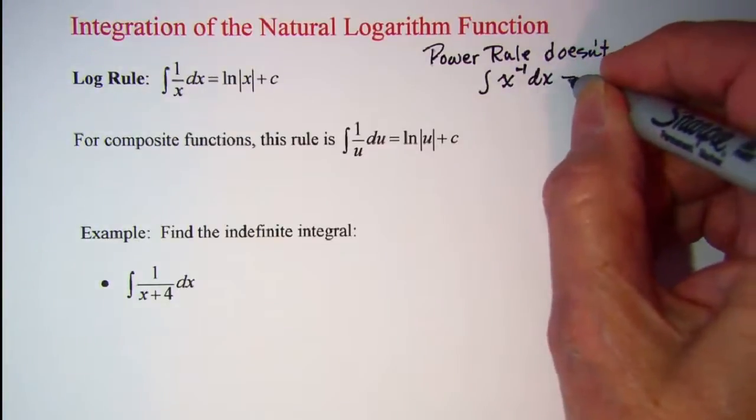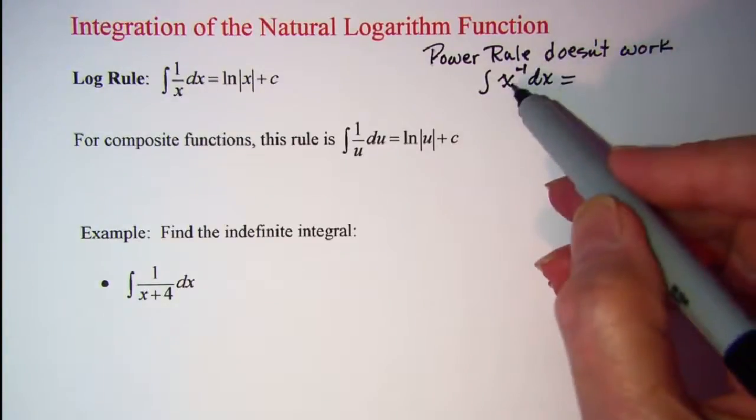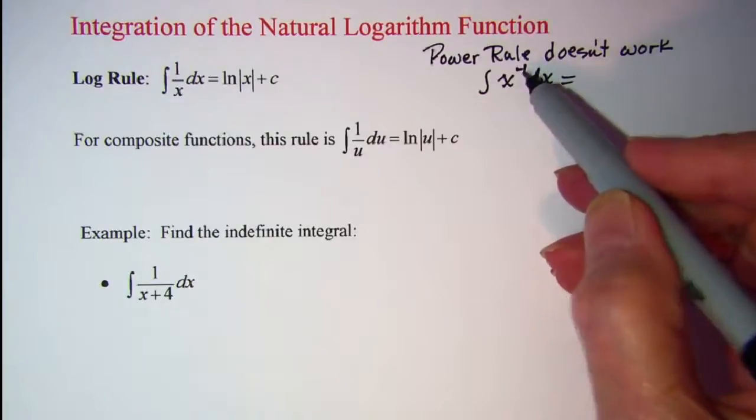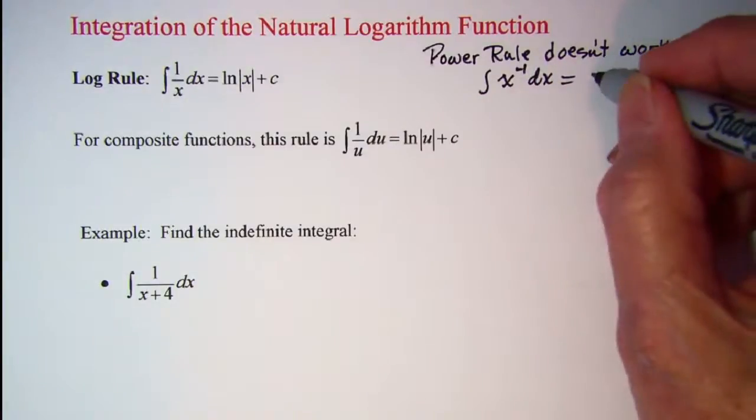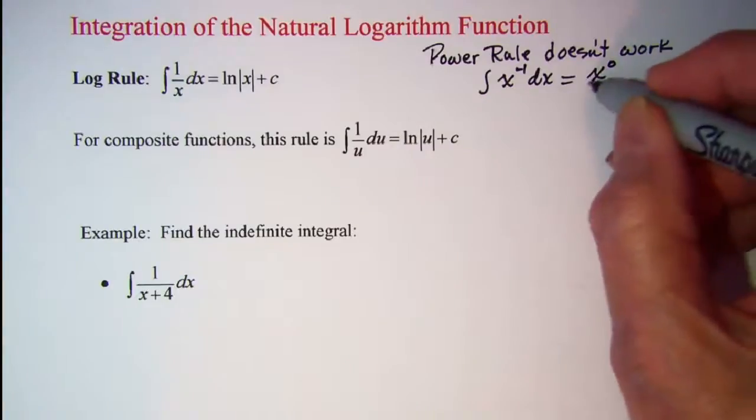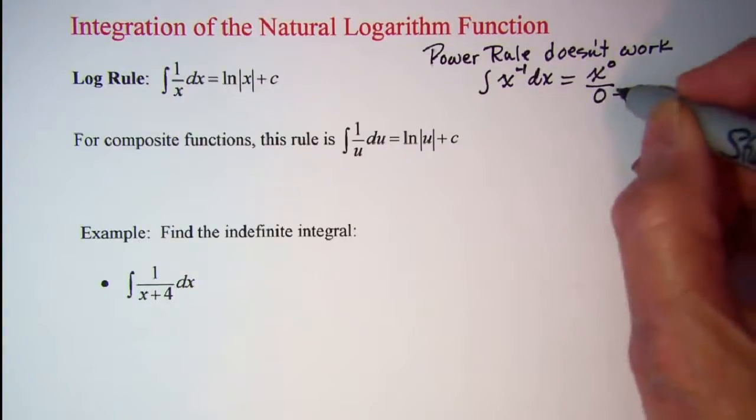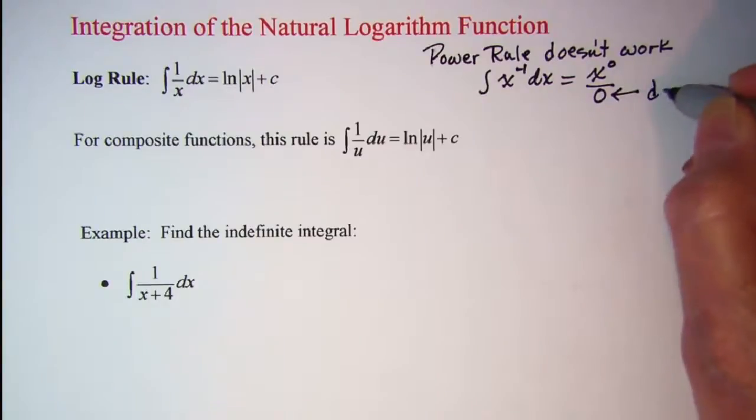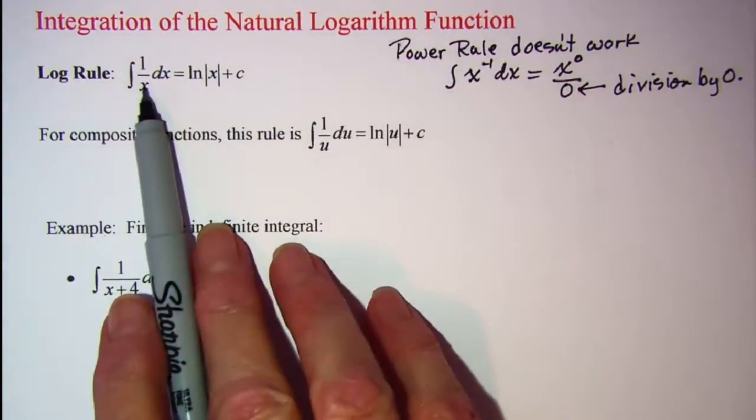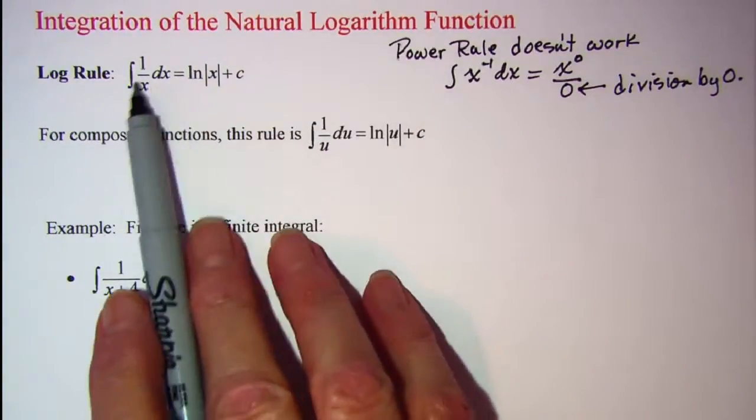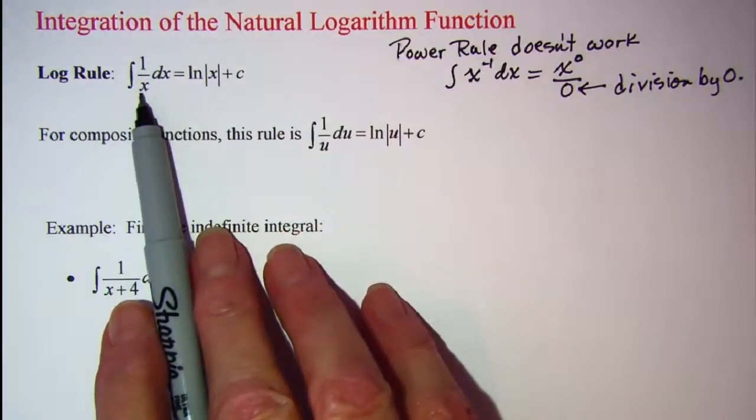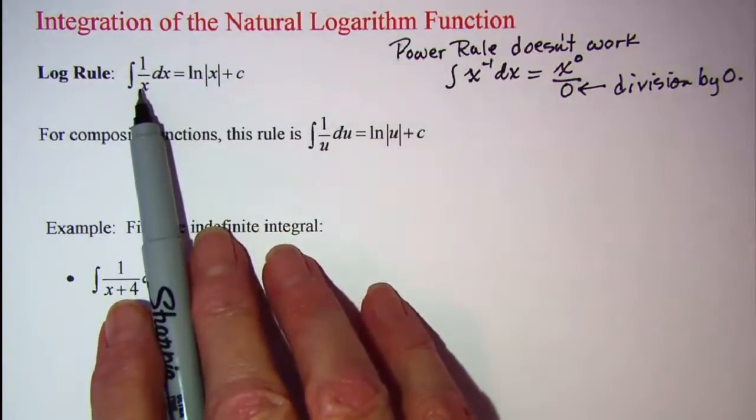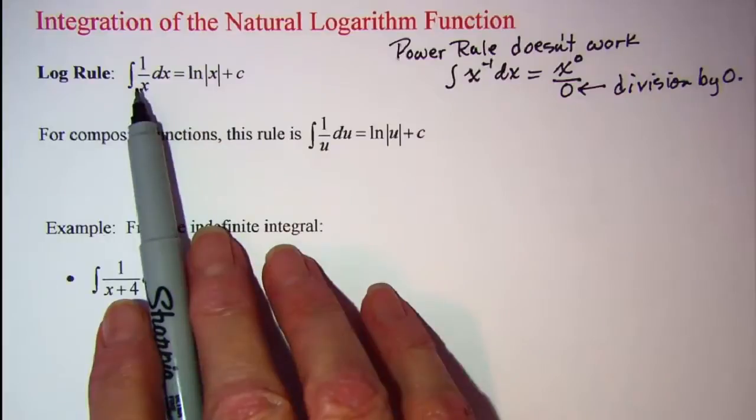Notice that what would happen is you increase the exponent by 1, so that would become x to the 0, and then divide by the new exponent, and we have division by 0. So this is the rule that needs to be used when you have a denominator that's one degree more than the numerator.